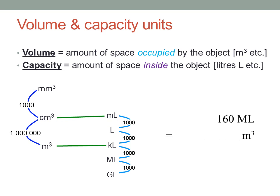And finally, one hundred and sixty megalitres into cubic metres. One hundred and sixty megalitres is one hundred and sixty thousand kilolitres, so that's the same as one hundred and sixty thousand cubic metres.